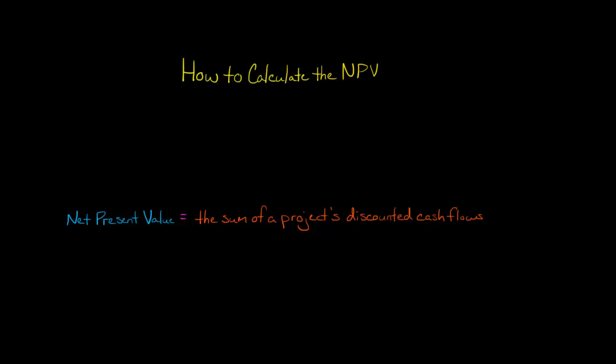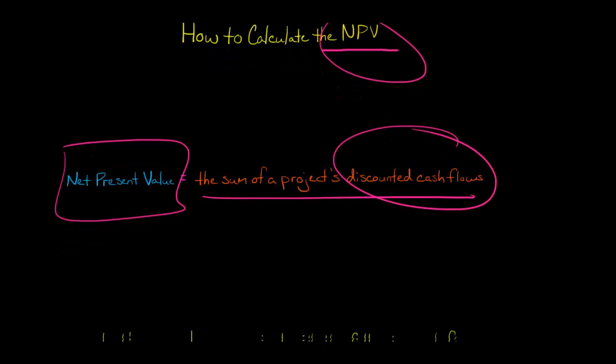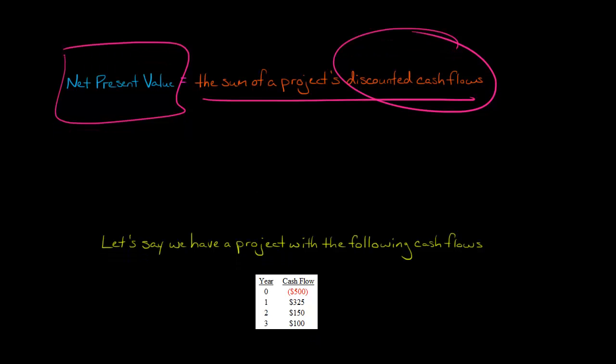In this video, I want to show you an example of how to calculate the NPV of a project. So just a quick review, the net present value, or NPV, is the sum of a project's discounted cash flows. Both the cash inflows and cash outflows, you discount them with the present value and then net them together.